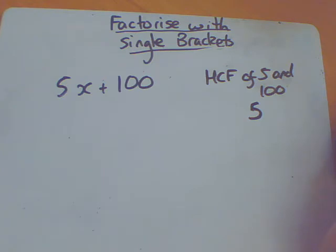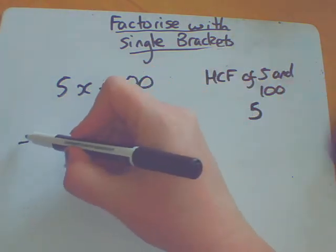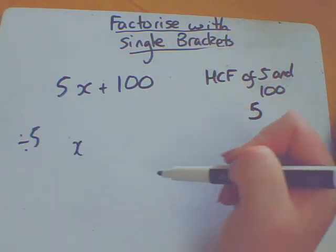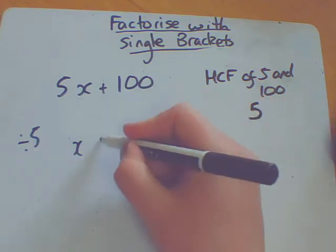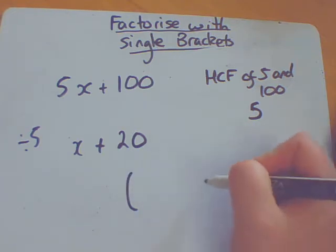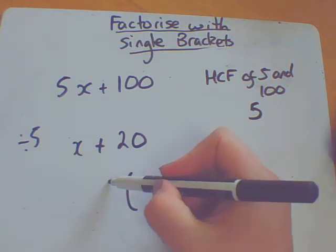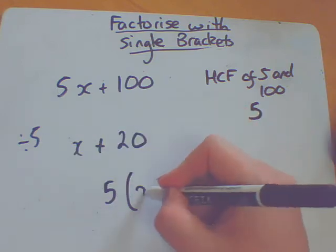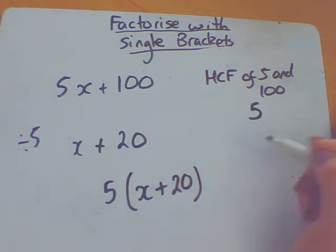Your next step, divide everything in here by your highest common factor. So let's divide all of this by 5. So 5x divided by 5 is a single x. 100 divided by 5 is 20. So what's your answer going to look like? Single set of brackets. 5, the highest common factor on the outside. x plus 20 goes on the inside.